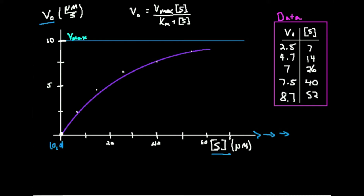The Vmax — this line right here — is essentially an asymptote. If you don't know what an asymptote is, it's essentially an imaginary line; in this case, a horizontal line. You can imagine this curve is never going to hit the asymptote, but it's going to get closer and closer. As you let substrate concentration get more and more, it will basically approach that line but never hit it.